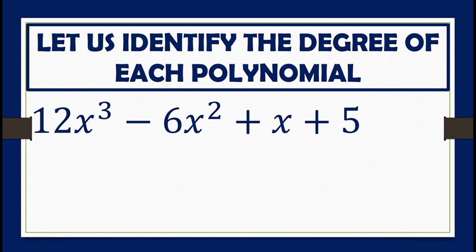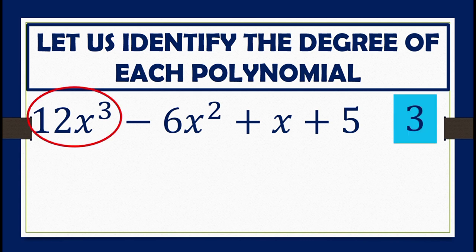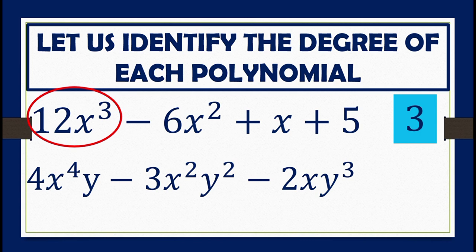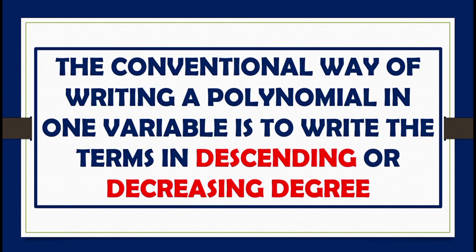For 12x cubed minus 6x squared plus x plus 5, the highest degree of exponent is 3. And lastly, 4x to the 4th y minus 3x squared y squared minus 2xy cubed. Adding the exponents of the first term 4x to the 4th y gives 5; the second term negative 3x squared y squared gives 4; and the third term negative 2xy cubed gives 4. Therefore, the degree of this polynomial is 5.